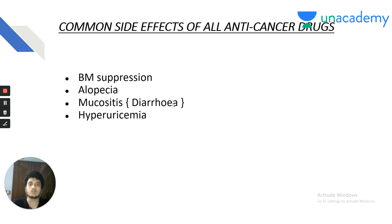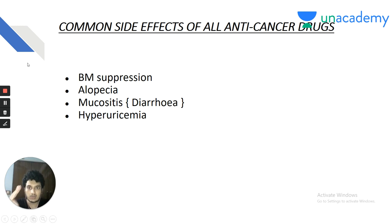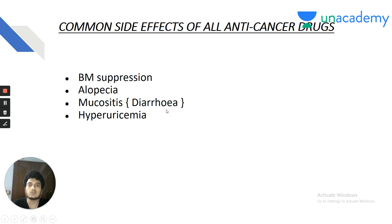Anti-cancer drugs act on rapidly dividing cells. There are two cell types in the body continuously dividing throughout life: bone marrow, continuously replicating to produce RBCs, WBCs and platelets; and GIT cells, continuously replicating. Bone marrow suppression is universally seen with all anti-cancer drugs. Mucositis causing diarrhea is also seen universally. Hair cells are also continuously replicating — hence alopecia is also a universal side effect.